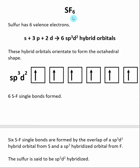Now we're going to look at SF6. Remember sulfur has 6 valence electrons. In this case, the sulfur is going to be using an s, 3p, 2d's to form 6 sp3d2 hybrid orbitals. Once again, we're putting 6 orbitals in and getting 6 orbitals out. These 6 orbitals are then going to orientate to form the octahedral shape, so we have 6 electron groups around the sulfur.